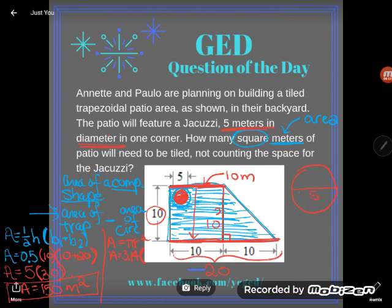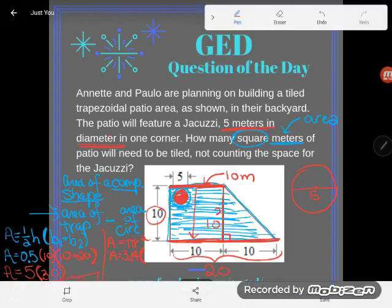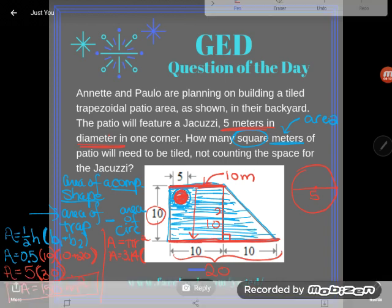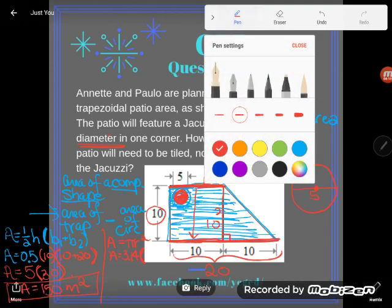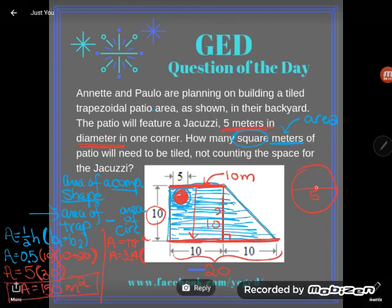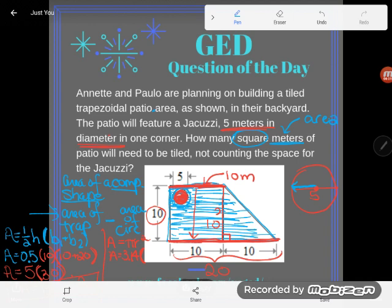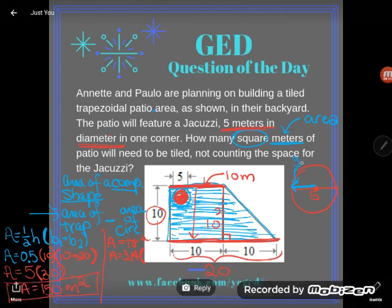Diameter goes through the center of a circle from edge to edge, but I need the radius. The radius starts at the center and goes to the edge, and there are two radii in a diameter. So the radius is half the diameter: 5 divided by 2 equals 2.5. I'm going to plug in 2.5 for my radius and then square that.